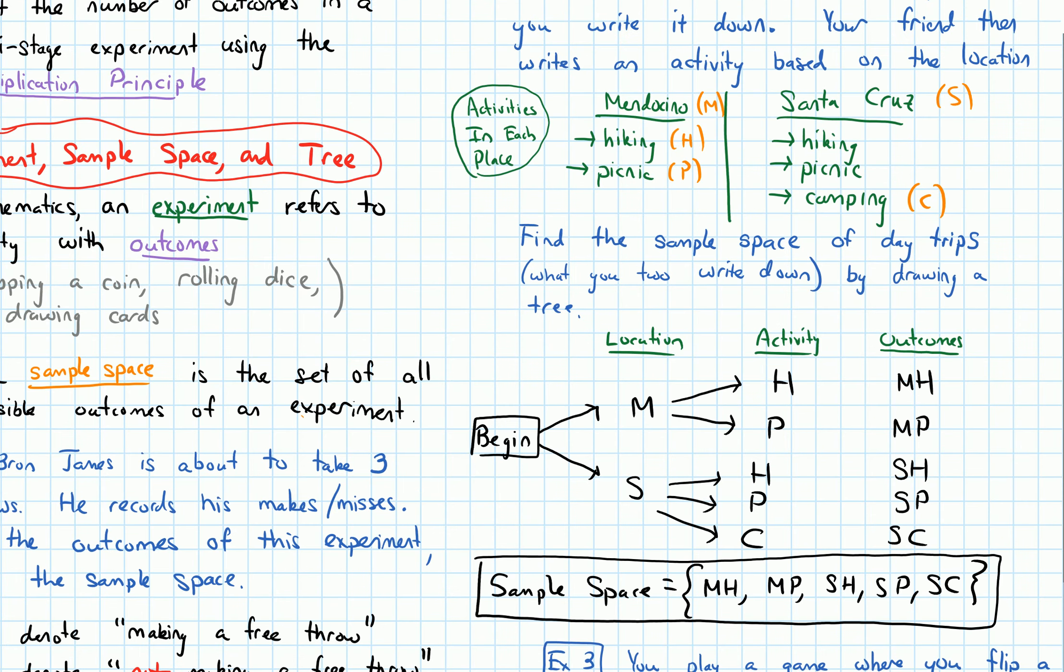If we compare that to this other example we did in the last video involving Mendocino and Santa Cruz, there was a step going from location to activity where the number of branches was different depending on the outcome. Like from the M, there were two branches going to H and P. But from S, there were three branches. So this wouldn't be a simple multiplication here.